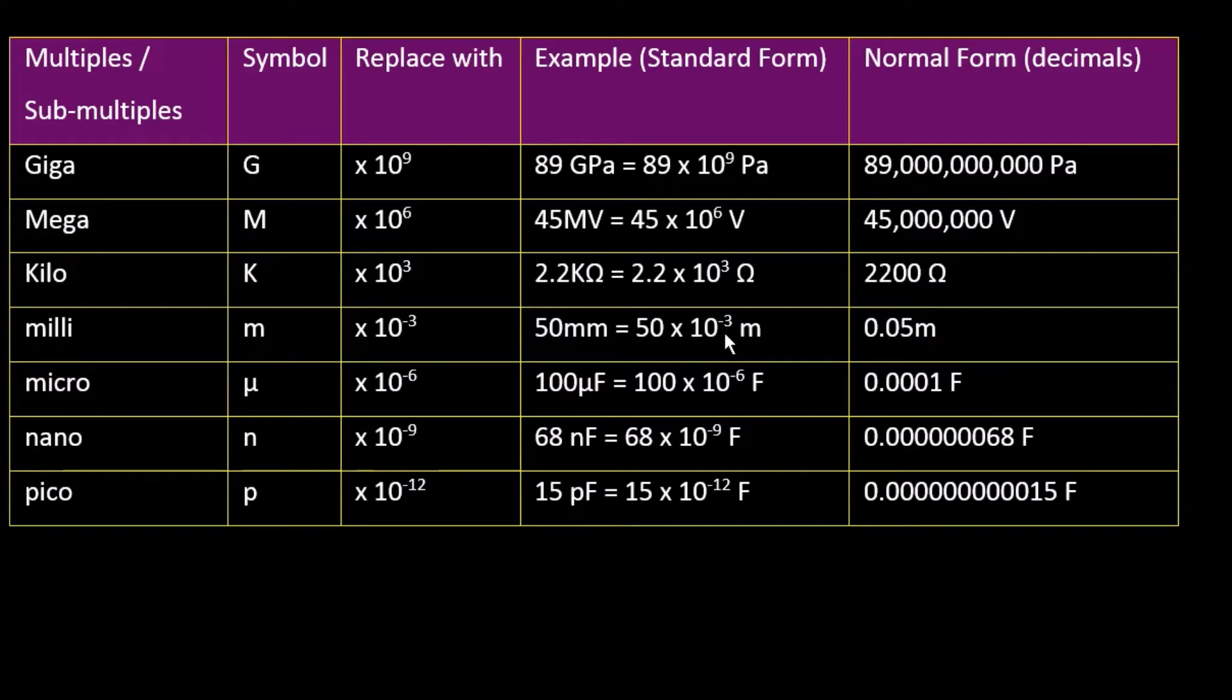So here you have 10 to power minus 3. So the decimal point goes 1, 2, 3, three places to the left. So the zeros fall on the left. 10 to power minus 6, the decimal point goes 6 places to the left. Same for 10 to power 9, same for 10 to power 12.